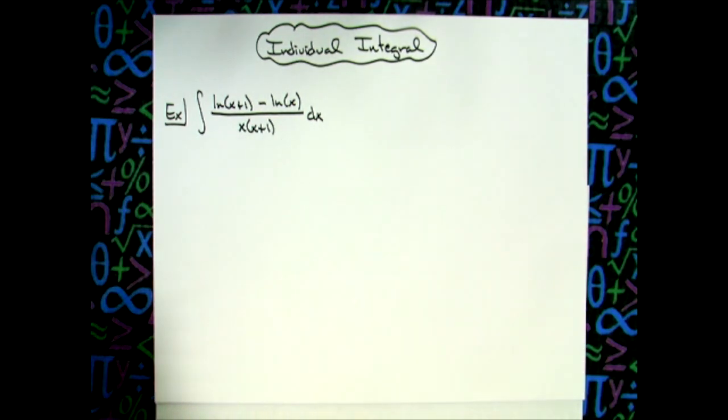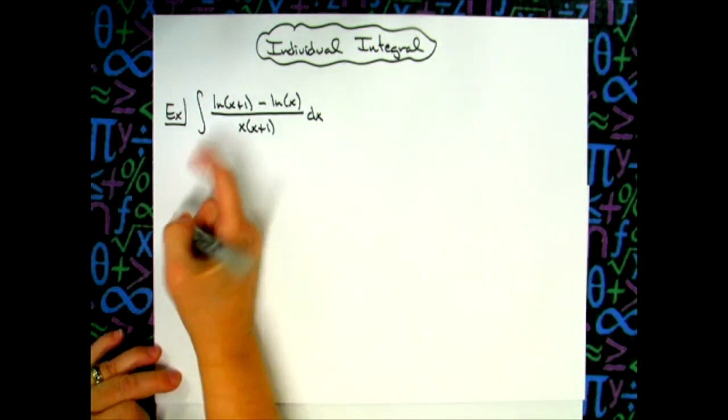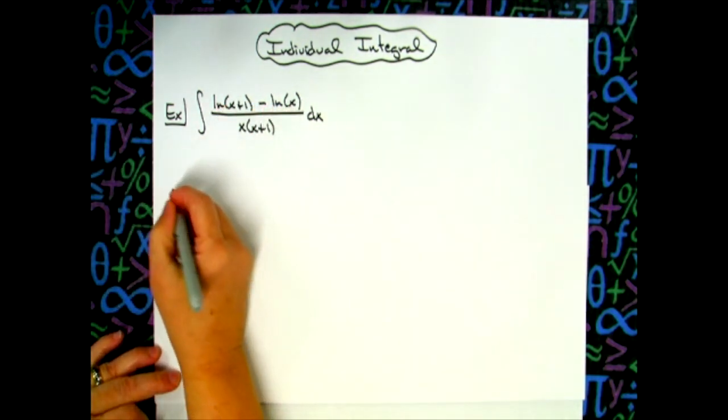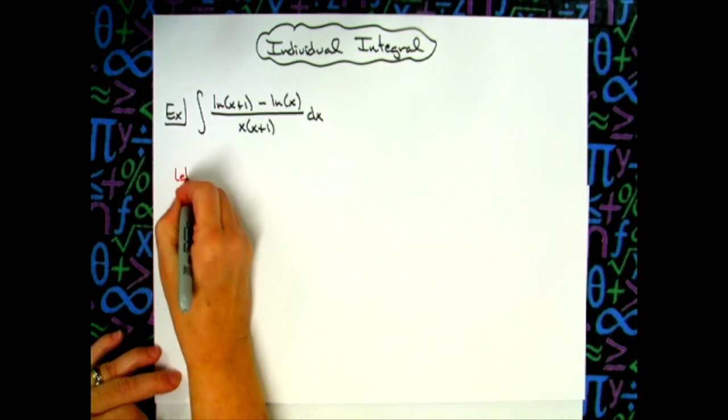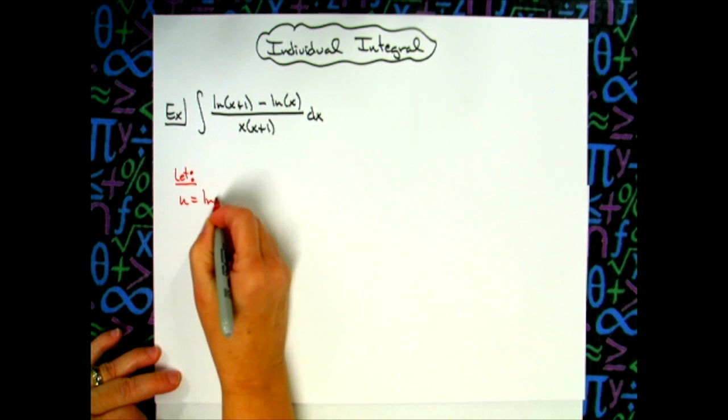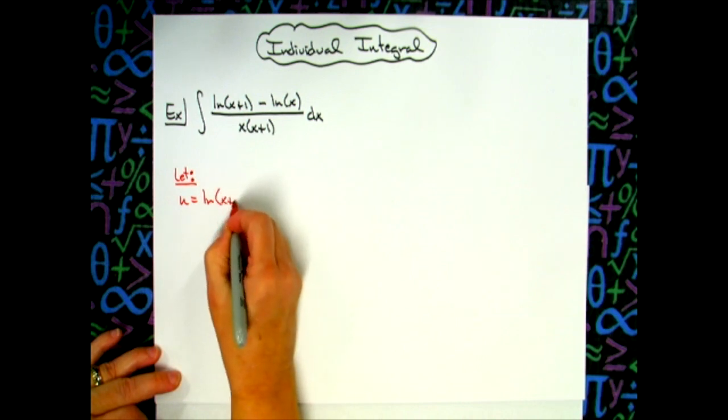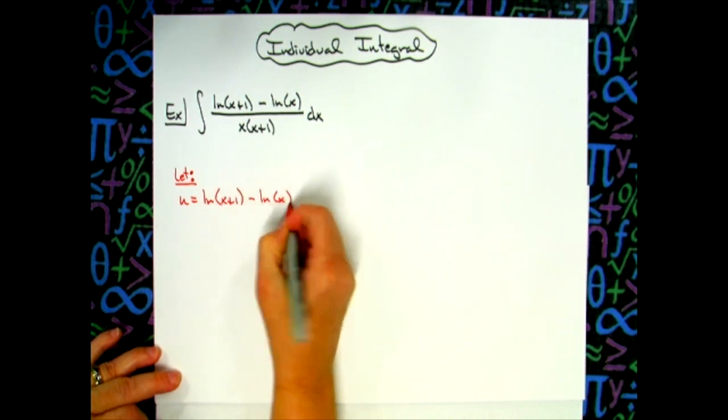So my first step is to choose my u and I'm going to let that entire numerator be my u. So we're going to let u equal natural log of x plus 1 minus natural log of x.